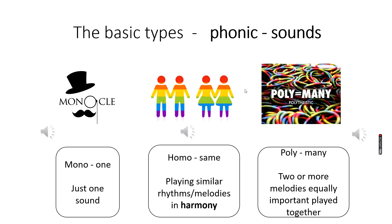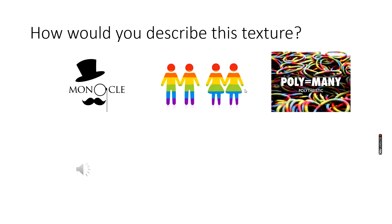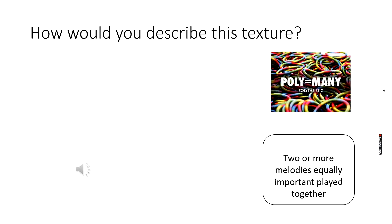Now there are three main textures that we have in music. How would you describe this texture I'm going to play for you? Is it only one sound? Is it homophonic or polyphonic? If you need to, pause the video and rewind to listen again. The answer was polyphonic — there are two or more melodies that were equally as important being played at the same time.